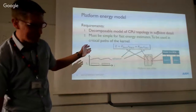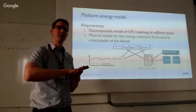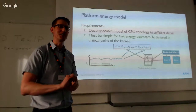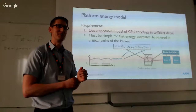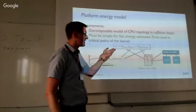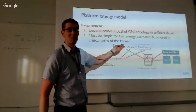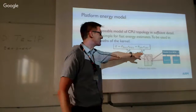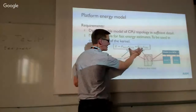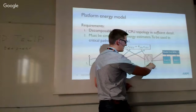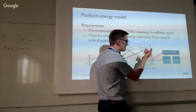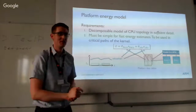The energy model we use for evaluating scheduling decisions has to be really simple, because we're doing this in fast paths in the scheduler. It's basically: we take how much time the task is busy, multiply by the busy power numbers, and do the same for idle time. We get busy and idle times from utilization tracking, look up power numbers from platform-provided tables, multiply, and get an energy number. And that's it.